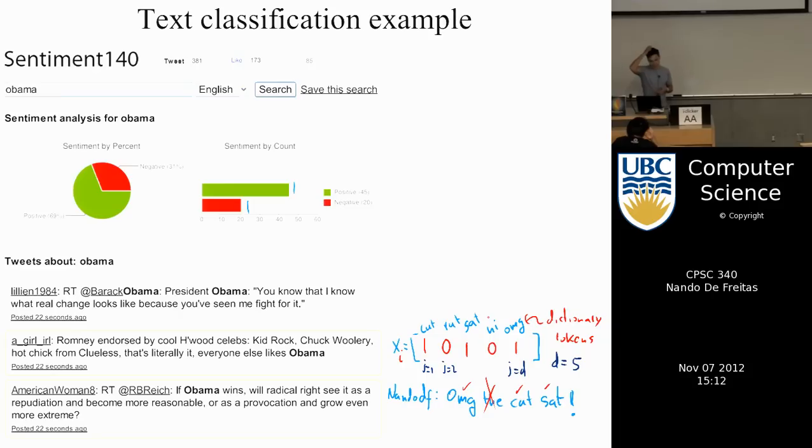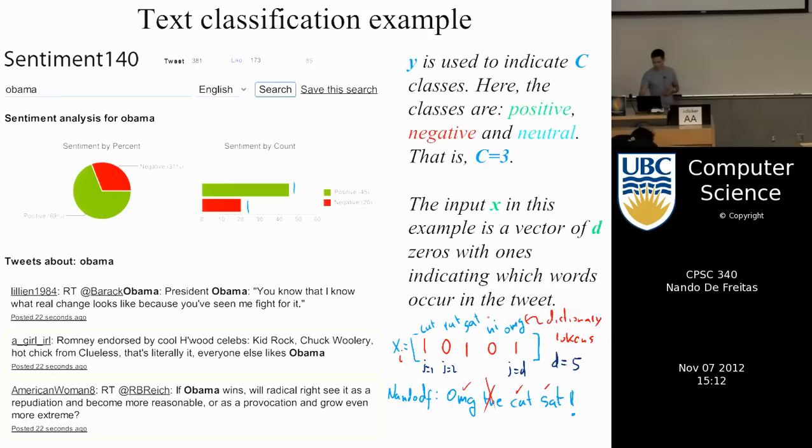We began with an example. And this example was the one of tweets. And so what we wanted to do is a tweet classifier. We want to say whether a tweet is positive or negative.